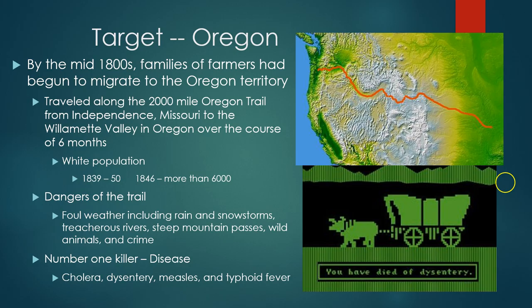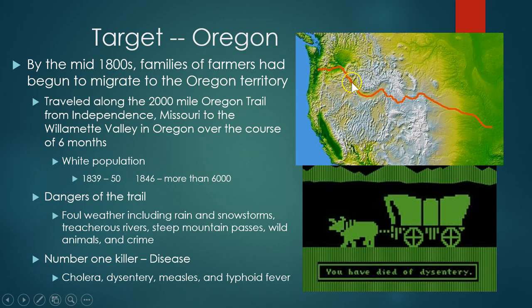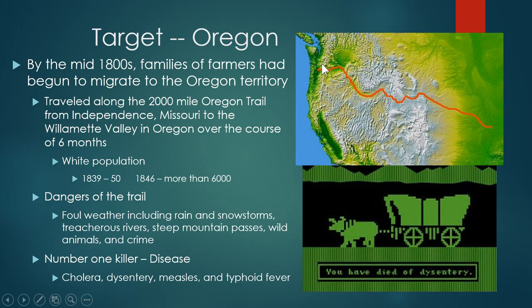By the mid-1800s, families of farmers started migrating to the Oregon Territory, traveling on a route known as the Oregon Trail. It started in the area of Independence, Missouri, and the distance was nearly 2,000 miles — usually taking six months or more. Their final goal was the Willamette Valley in Oregon, with its mild climate, fertile soil, lots of rainfall, and good farmland. In 1839 there were only about 50 white settlers in this area, but by 1846 there were more than 6,000 — a pretty significant wave of people traveling this trail.